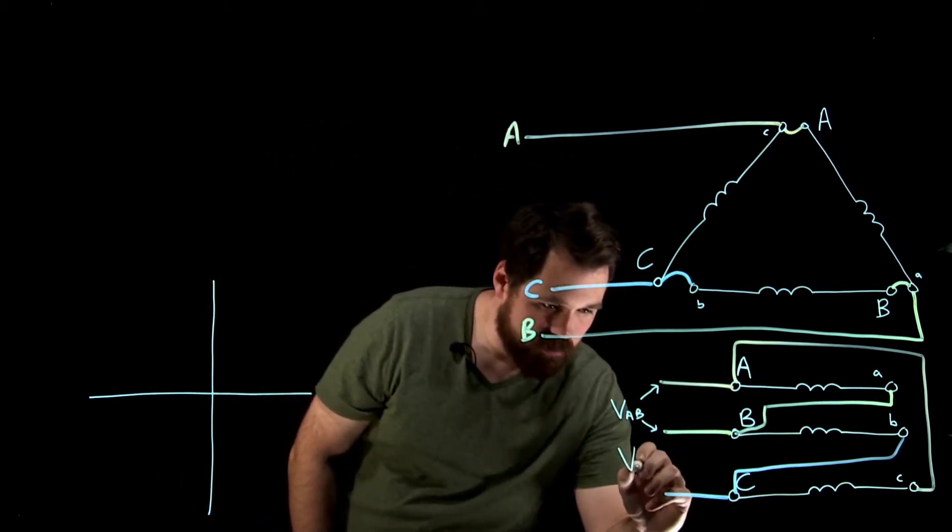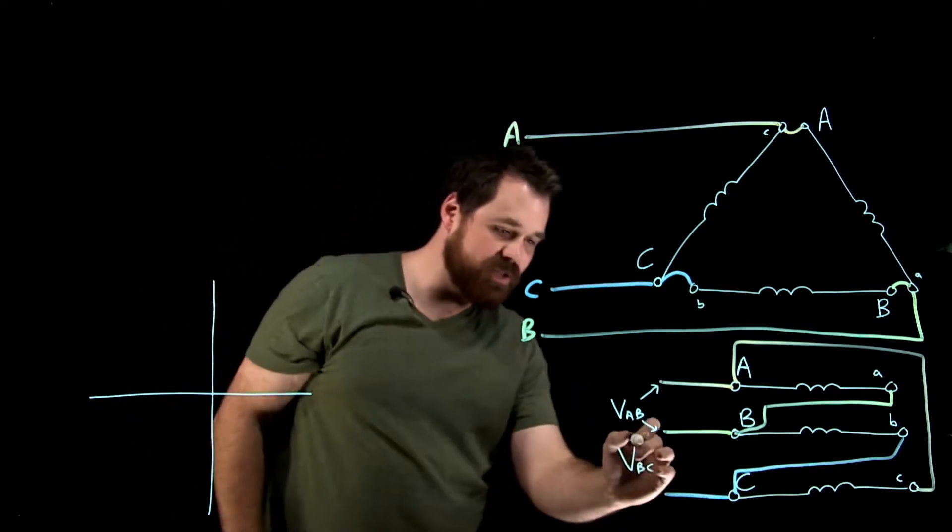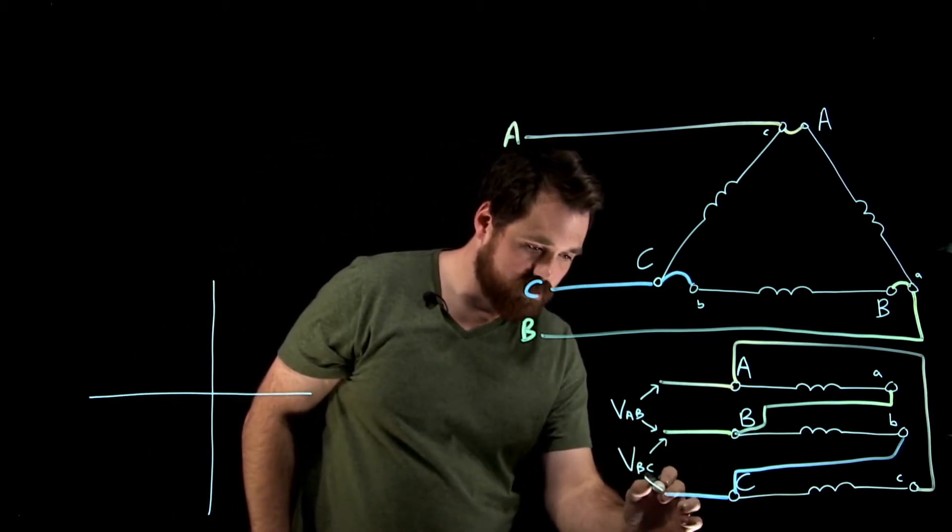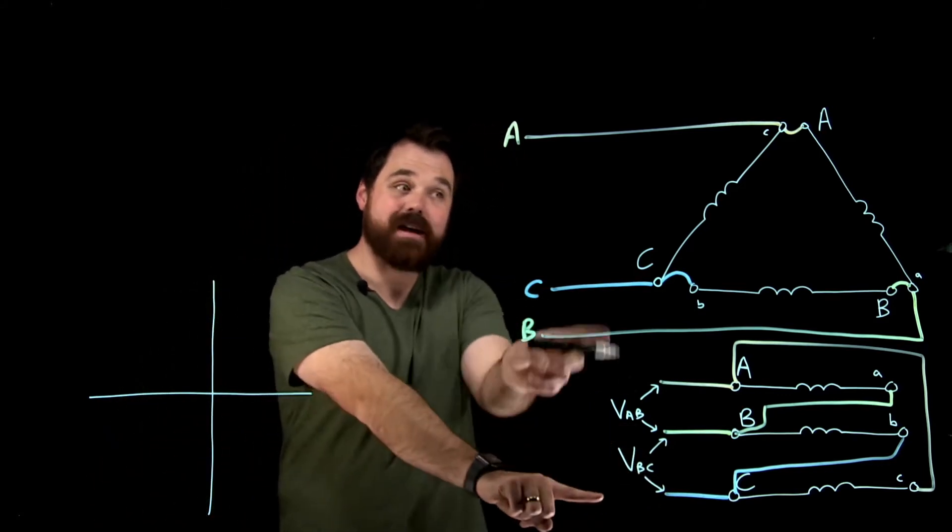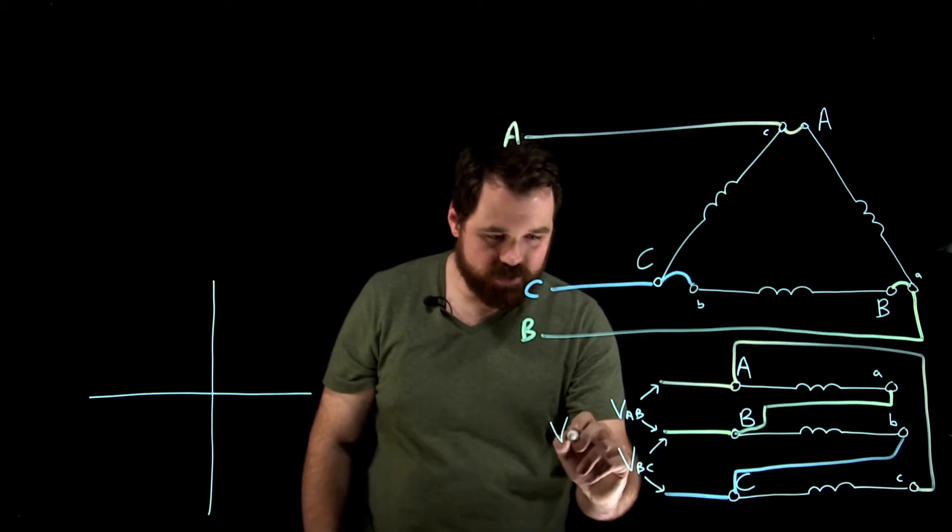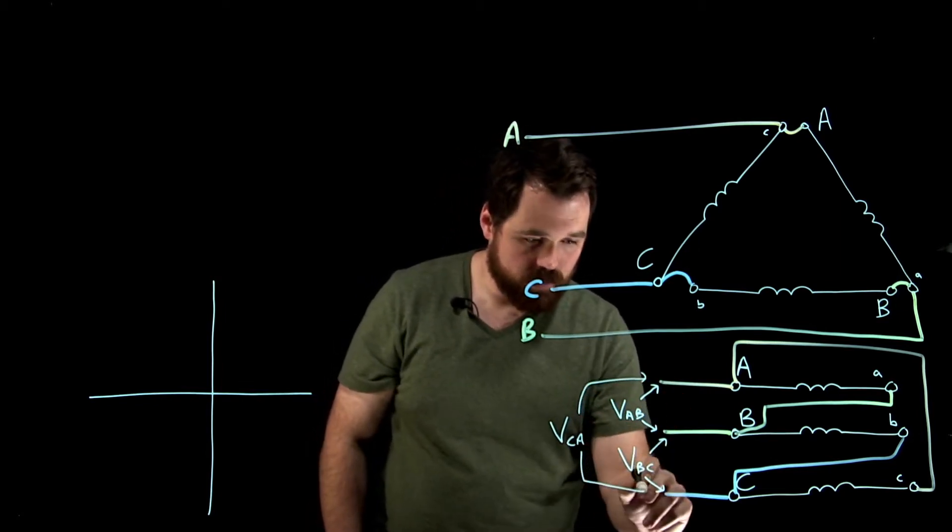Then we would read V B to C. Again, two leads from B to C. And then the last one would be from C to A. So the last one we call V C to A.